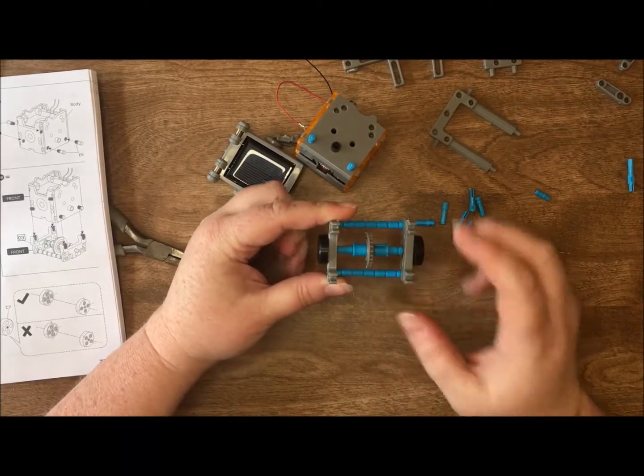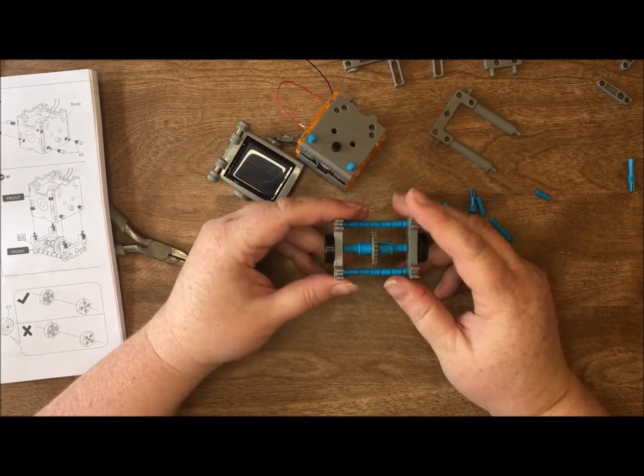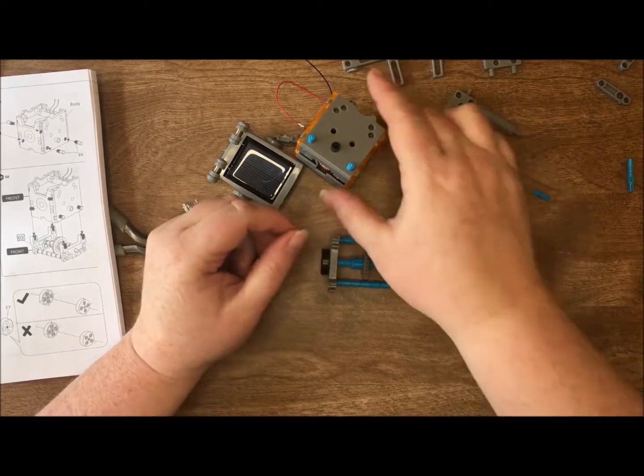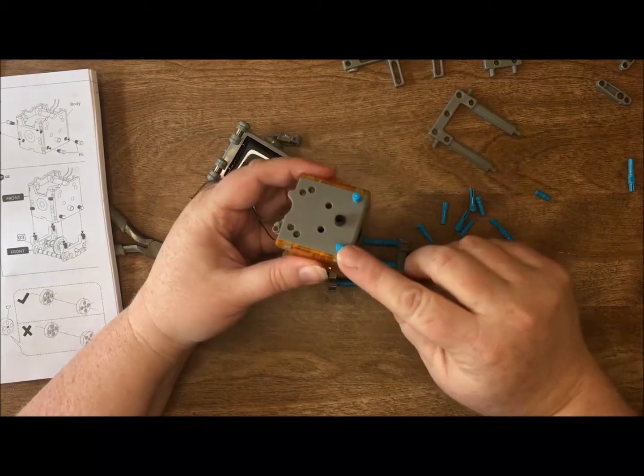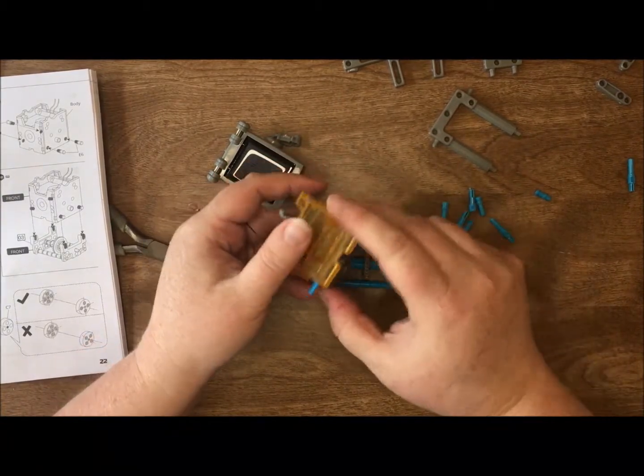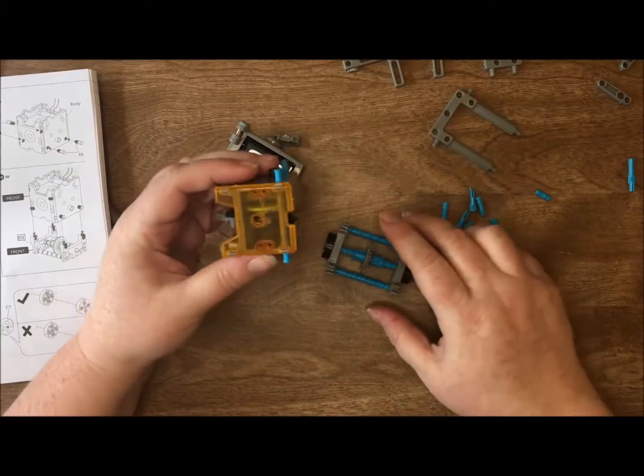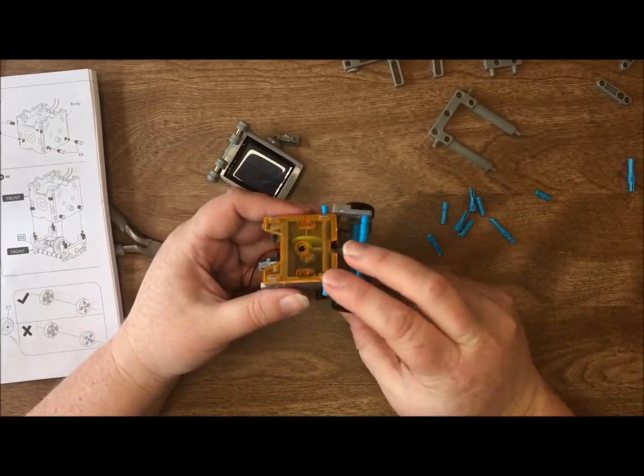Once you have this base put together, just make sure it rotates. That wheel needs to turn in order to make everything work. So this is your base. Here's our base robot. We've got our pegs put in the sides, and we're going to attach this little base that we just assembled to it.